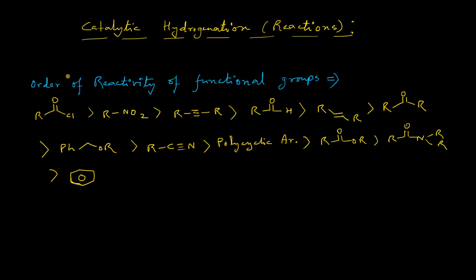In this video we are going to discuss some catalytic hydrogenation reactions. Before we go into the reactions, we have to remember this particular order of reactivity of some organic functional groups. The highest reactivity towards catalytic hydrogenation is possessed by acyl chloride derivatives, and the least reactivity is possessed by the phenyl ring or the benzene ring, with other functional groups in between.